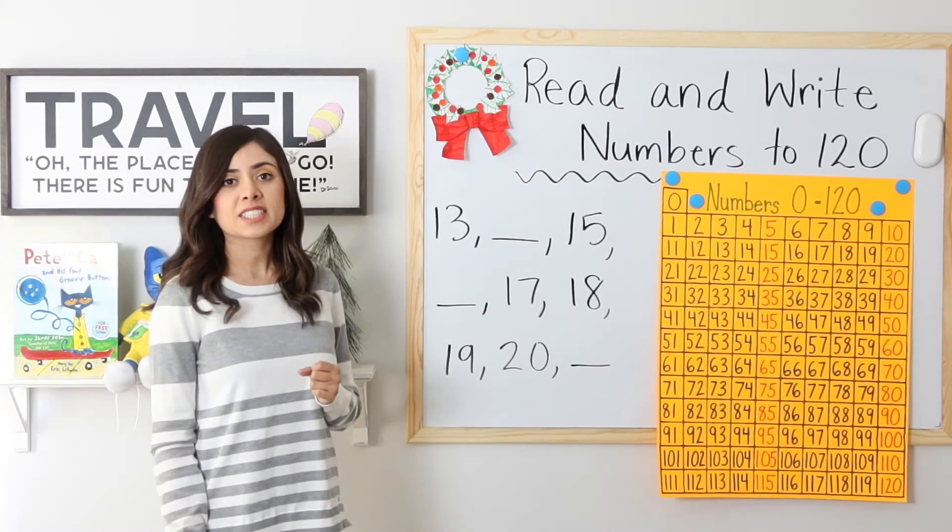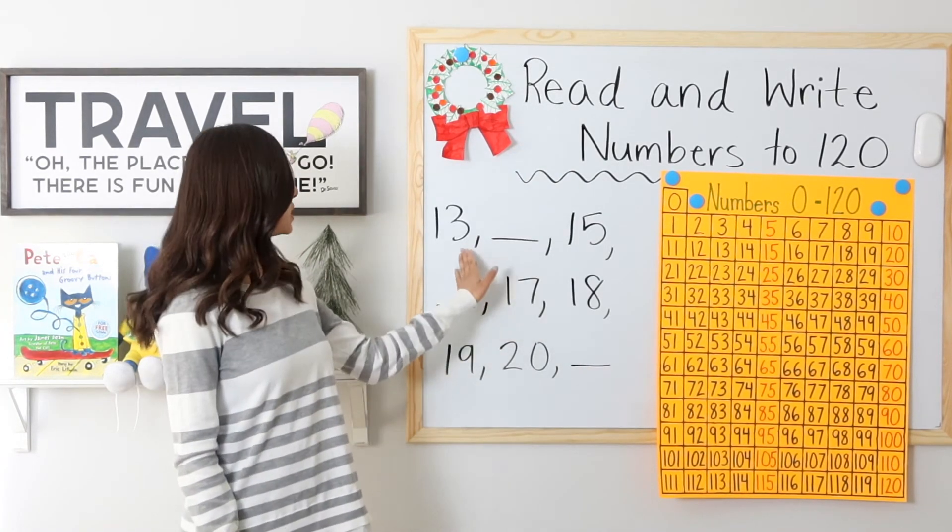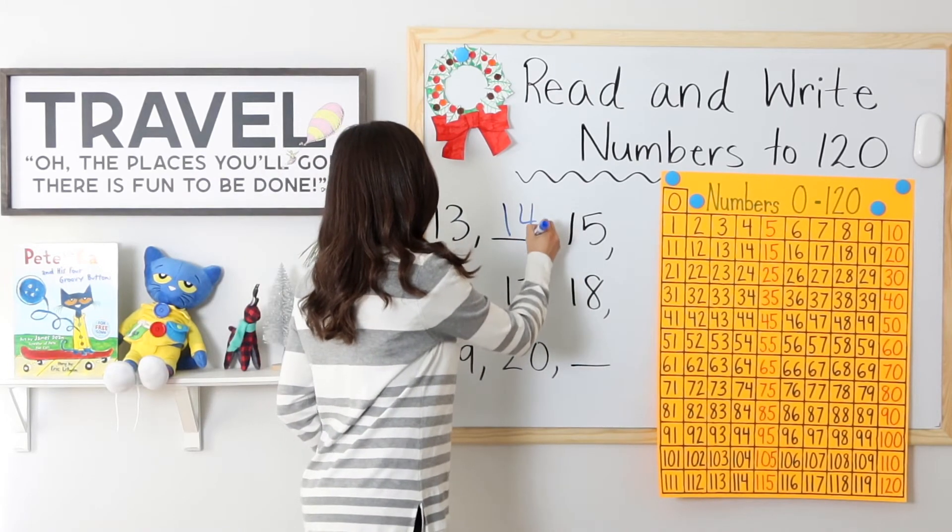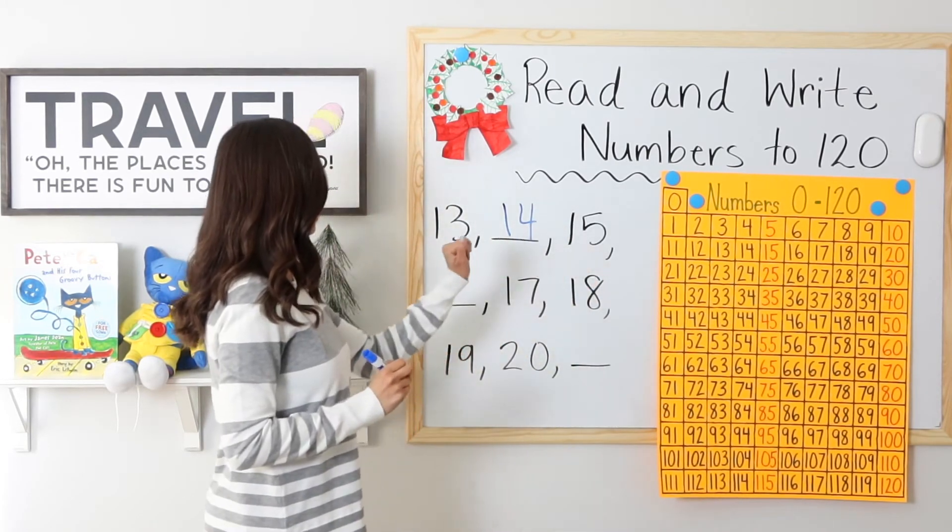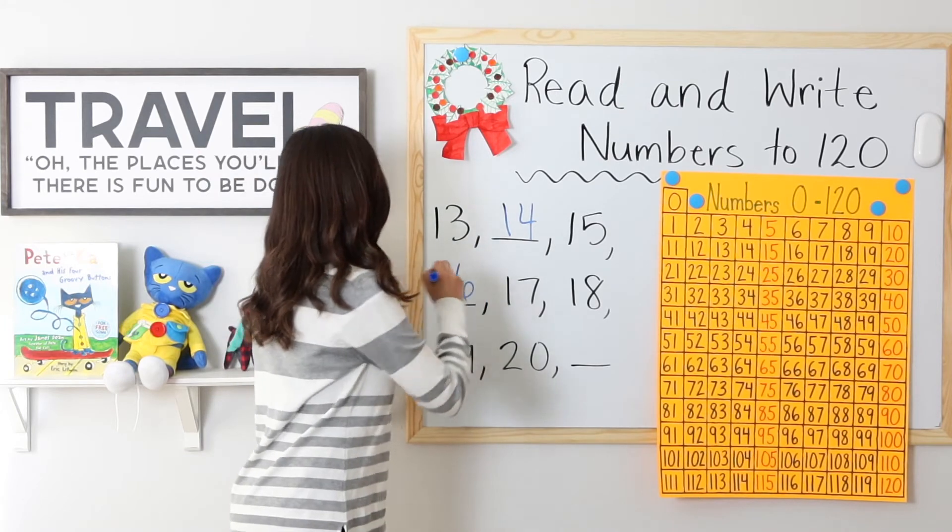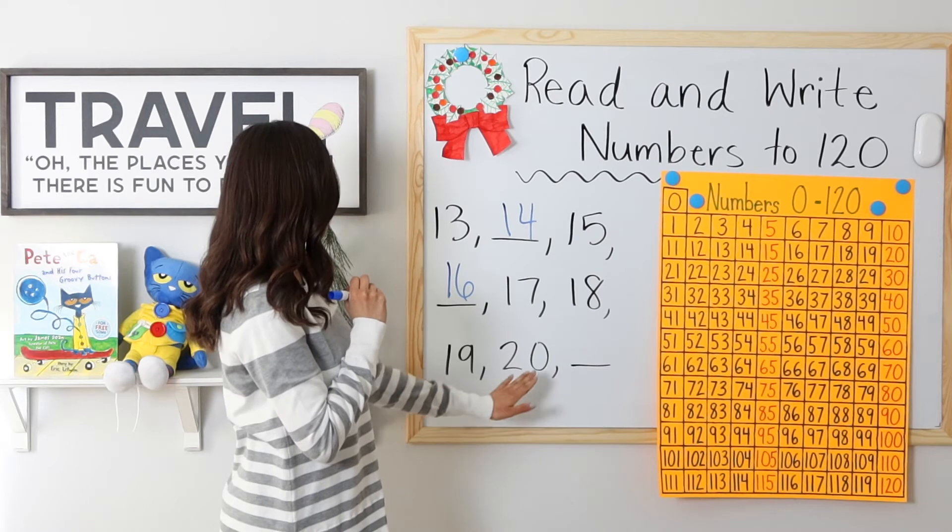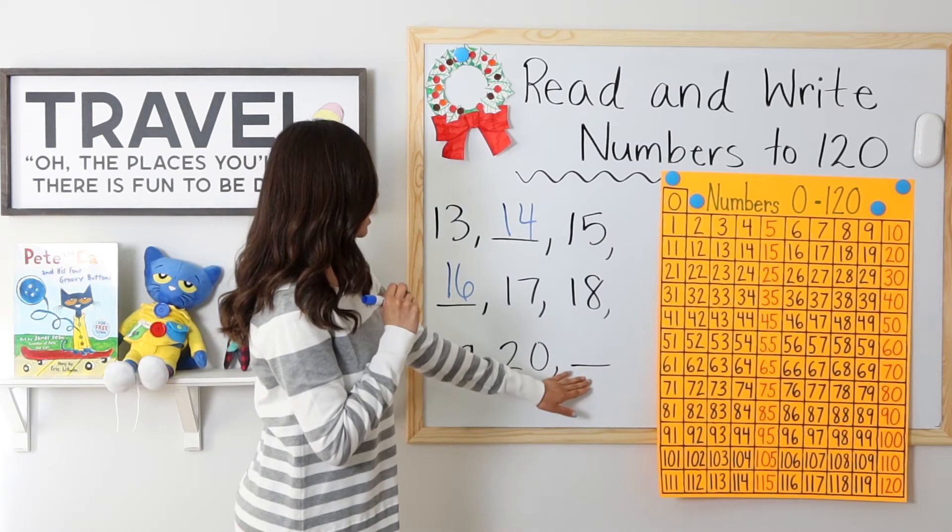Ready for the next example? Starting at 13. 13, 14, 15, 16, 17, 18, 19, 20, 21.